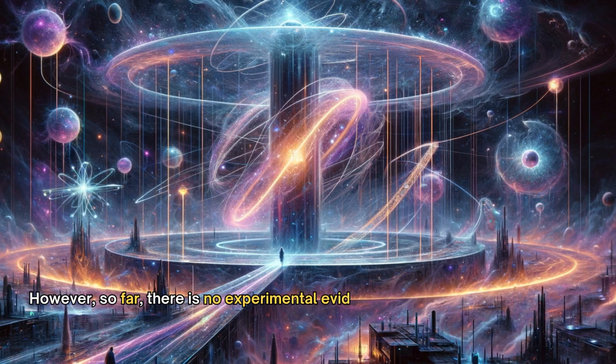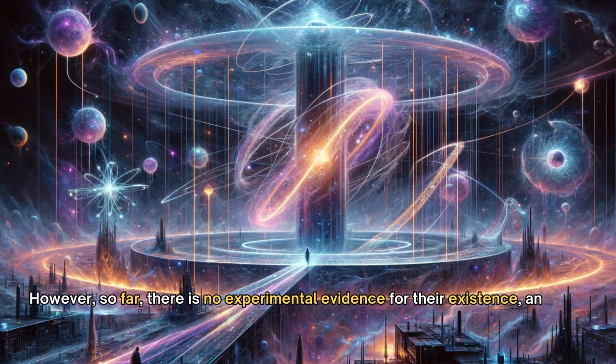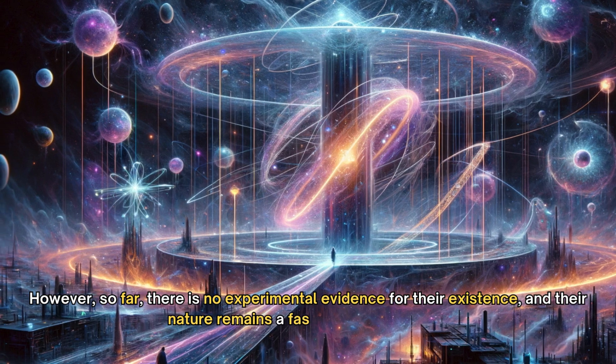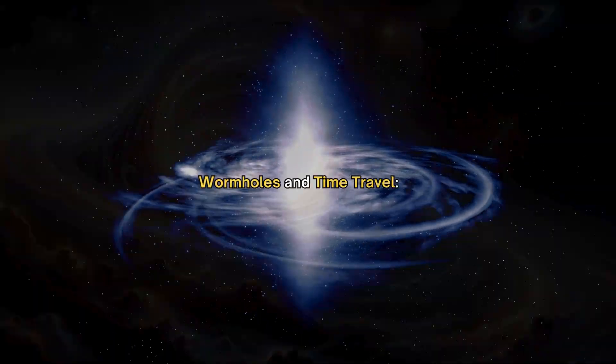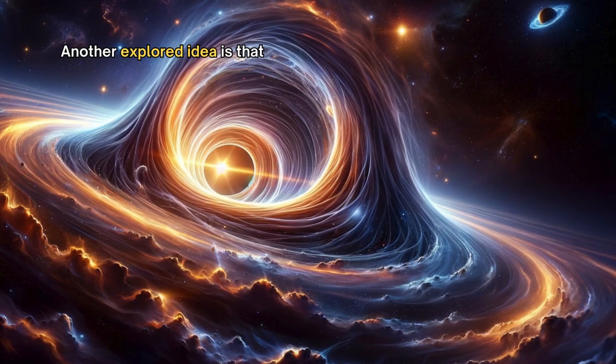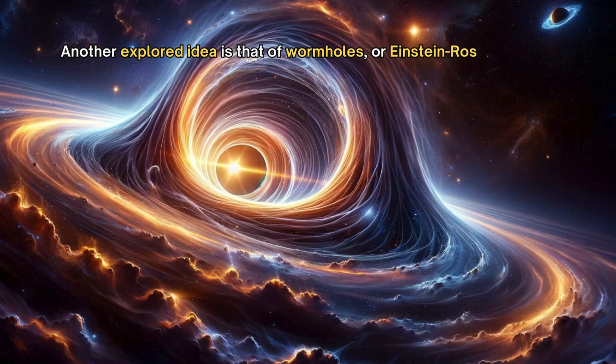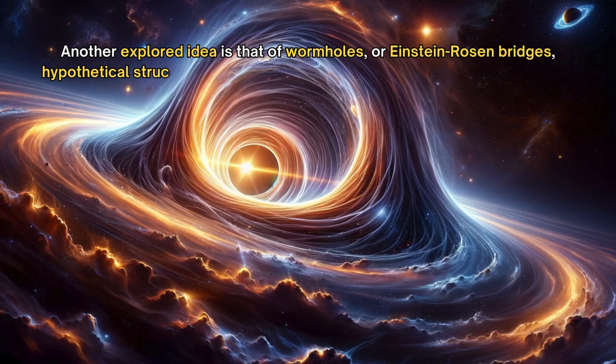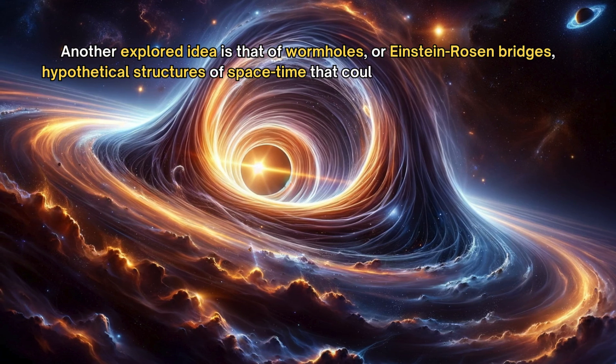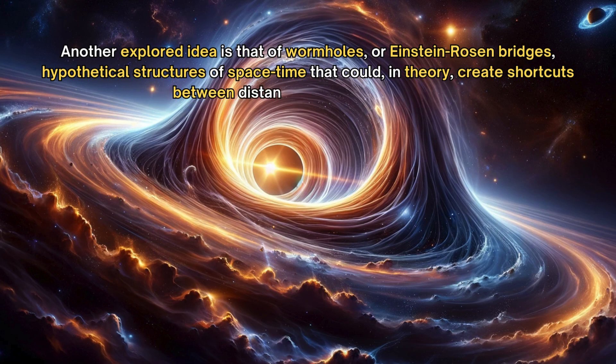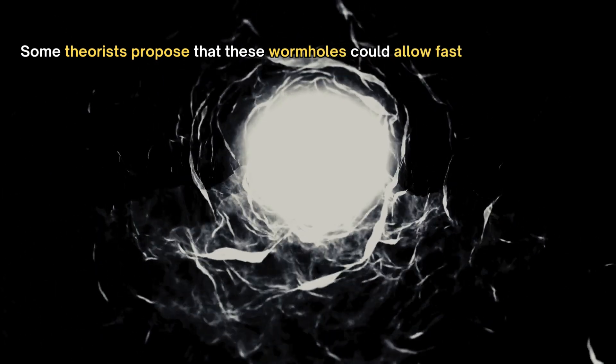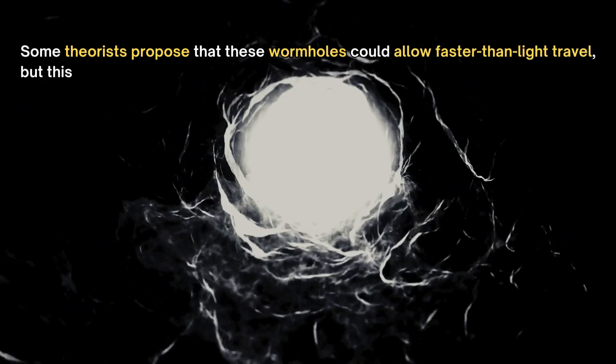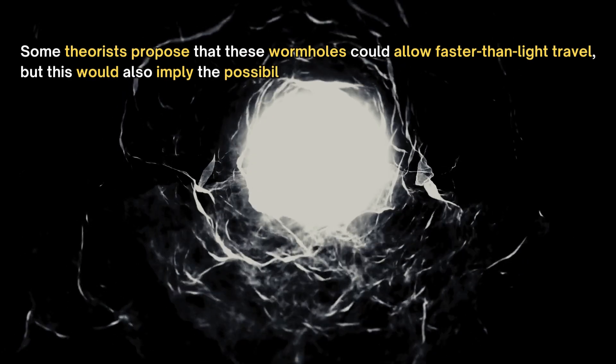Wormholes and time travel. Another explored idea is that of wormholes, or Einstein-Rosen bridges—hypothetical structures of space-time that could, in theory, create shortcuts between distant points in the universe. Some theorists propose that these wormholes could allow faster-than-light travel, but this would also imply the possibility of time travel and, consequently, temporal paradoxes.